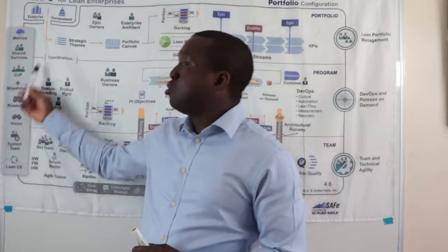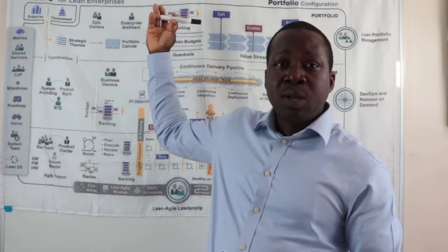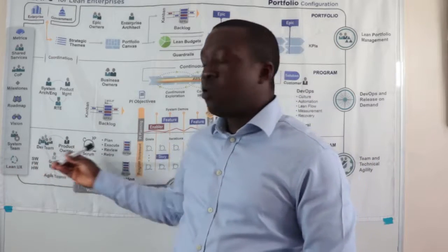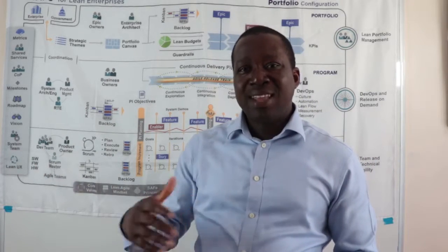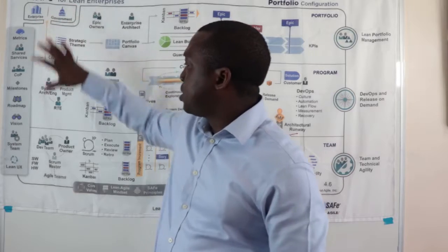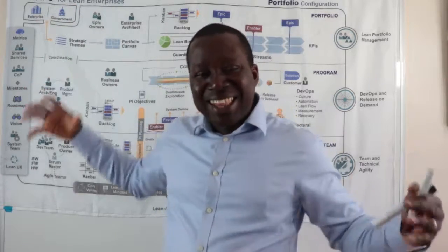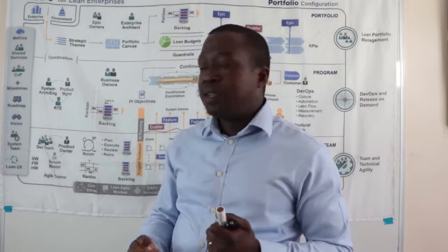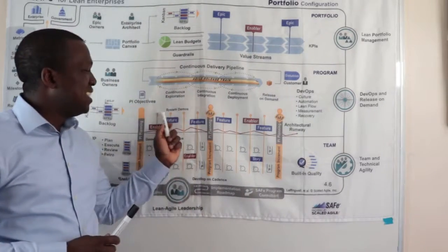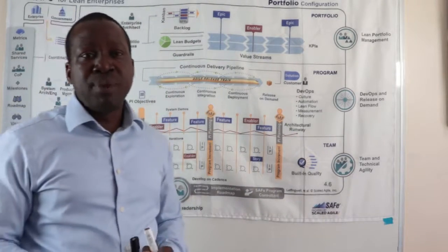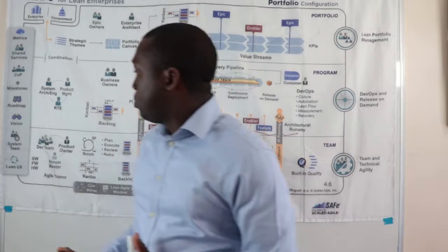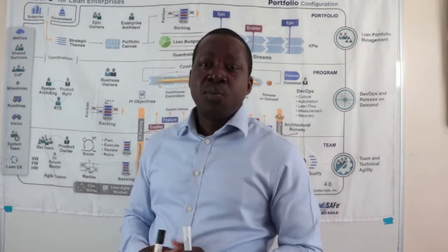We've got our roadmaps, which will be derived from our epics. We've got epic roadmaps, feature roadmaps, and then team roadmaps of work that are seated in the backlog. We also need a clear vision, and that vision will come from the business and from the product management team, which aligns the entire teams to deliver value. We've got our systems team that are continuously integrating work done by the team and helping the teams work together effectively. Finally, we've got our lean user experience.